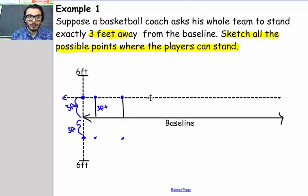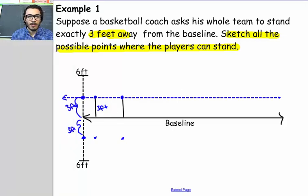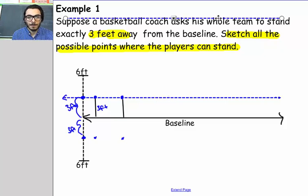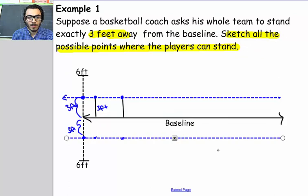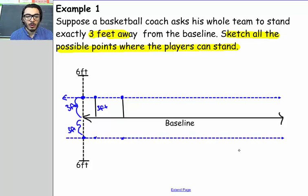Let me go ahead and make that line the same color as the other points, and I can also do the same on the other side. The players could stand anywhere on these blue lines and they will be 3 feet away from the baseline. For the sake of simplicity, let's assume that this baseline goes on forever — only on top of it or below it. So there's our sketch.